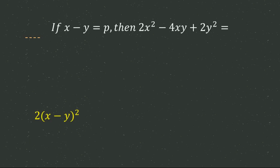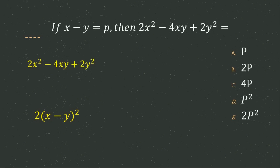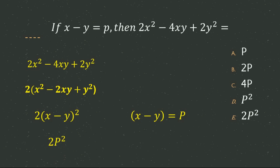The next question: if x − y = p, then 2x² − 4xy + 2y² equals what? We use the formula (a − b)² = a² − 2ab + b². Taking 2 as a common factor gives 2(x² − 2xy + y²), which equals 2(x − y)². Since x − y = p, the expression becomes 2p². So E is the correct answer.